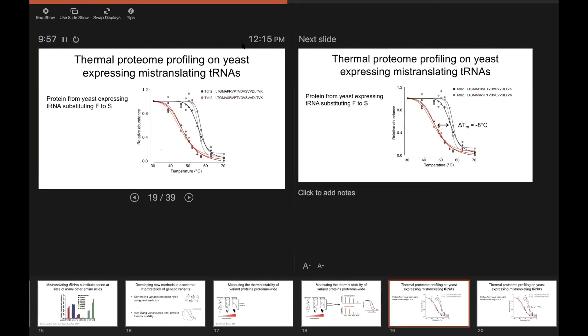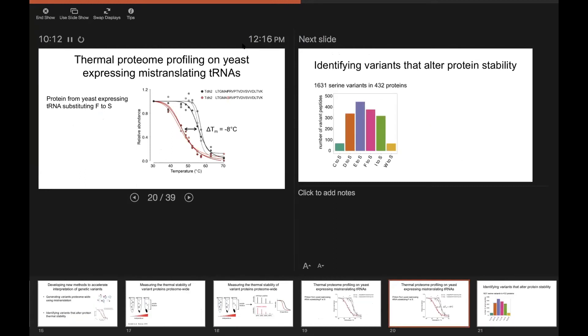And in black, you can see the wild-type version of that protein, which contains phenylalanine. And in red, you can see the serine substitute version of this protein. And in this example, you can clearly see that the serine variant has reduced thermal stability.